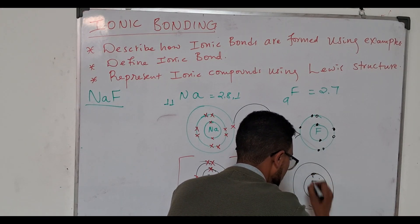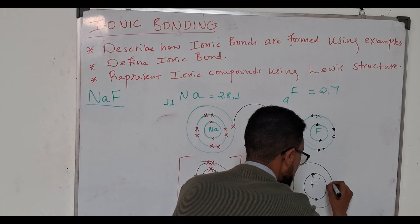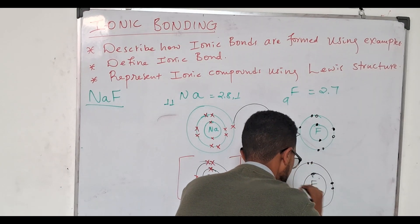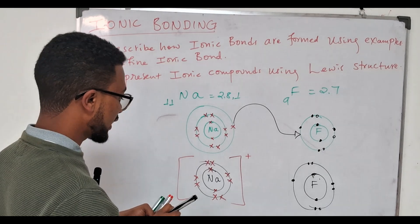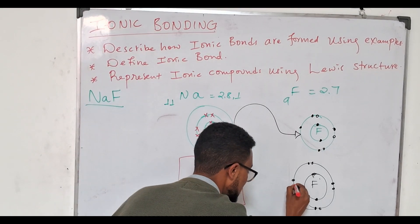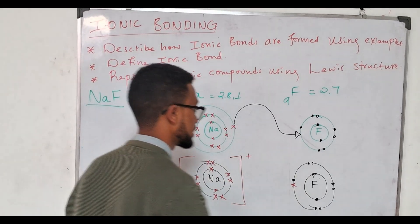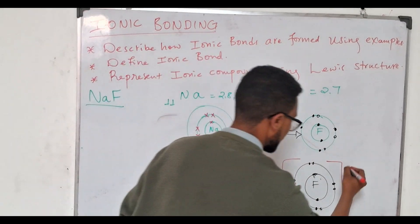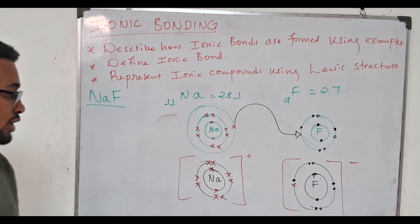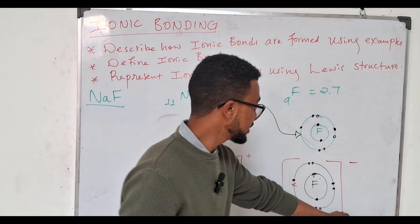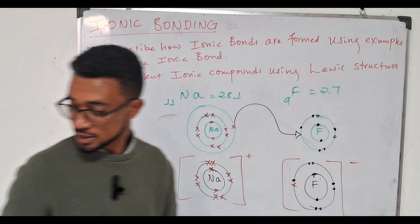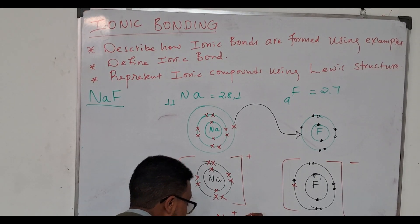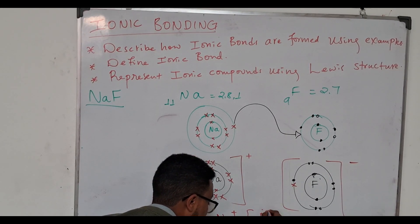For fluorine, we had two electrons in the first shell and seven electrons in the second shell. We have added one electron from sodium, represented by an 'x'. Fluorine will attain a negative charge because it has accepted one electron. This can be represented as sodium-plus and fluoride-minus.